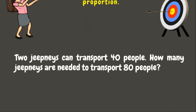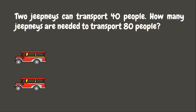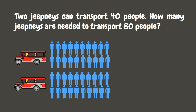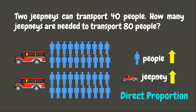Let's begin. Let's try this first example: two jeepneys can transport 40 people. How many jeepneys are needed to transport 80 people? We can say from the given situation that the more people there are, the more jeepneys we need. It means that when the number of people increases, the number of jeepneys should increase as well. This is an example of direct proportion. But what is a direct proportion?